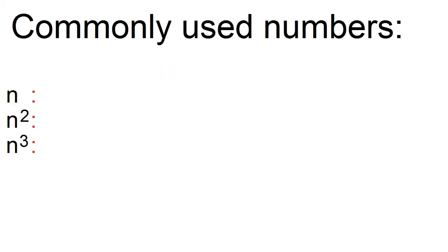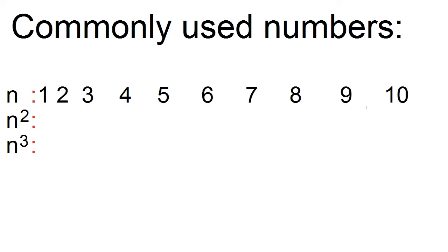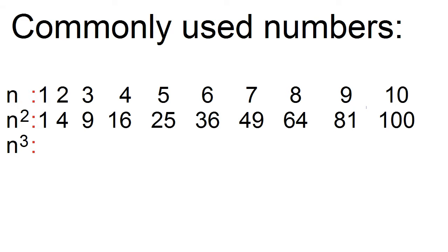These are the commonly used numbers in factoring sum and difference of two cubes. The squares and cubes of 1 through 10. The squares are 1, 4, 9, 16, 25, 36, 49, 64, 81, and 100. To find the square of a number, just multiply the number by itself: 1 times 1 is 1, 2 times 2 is 4, 3 times 3 is 9, and so on.